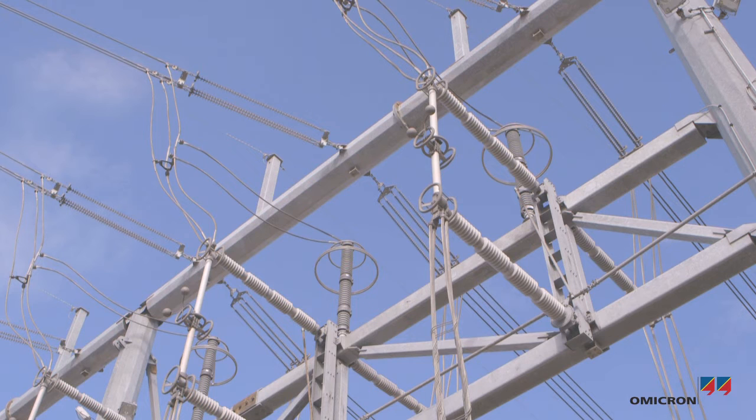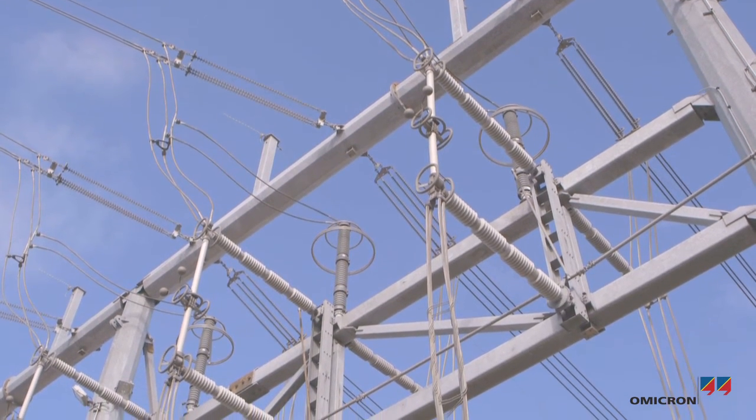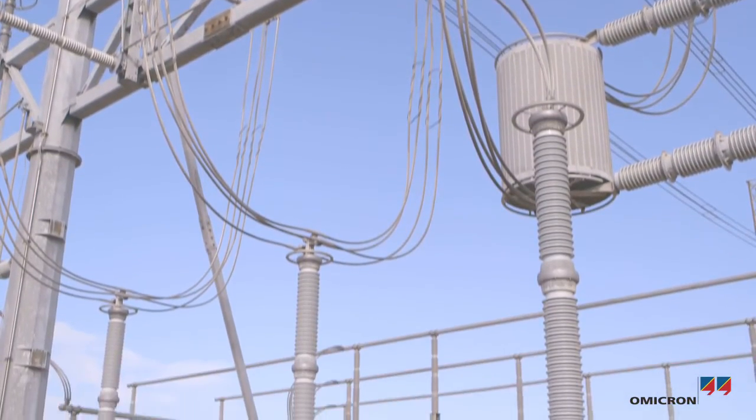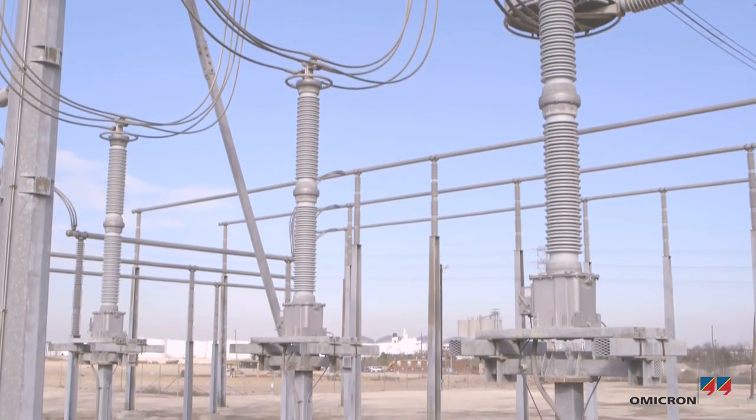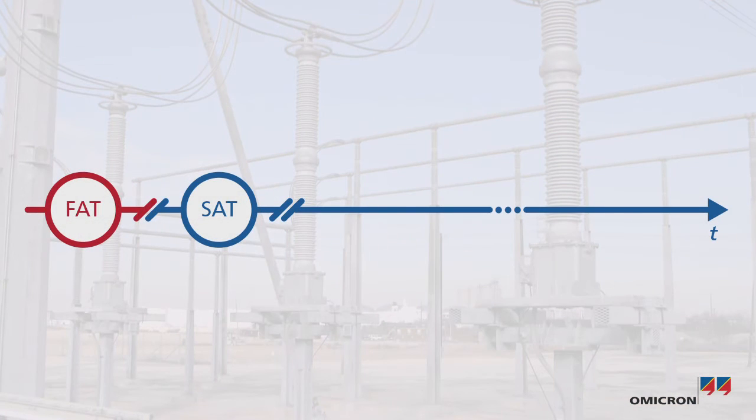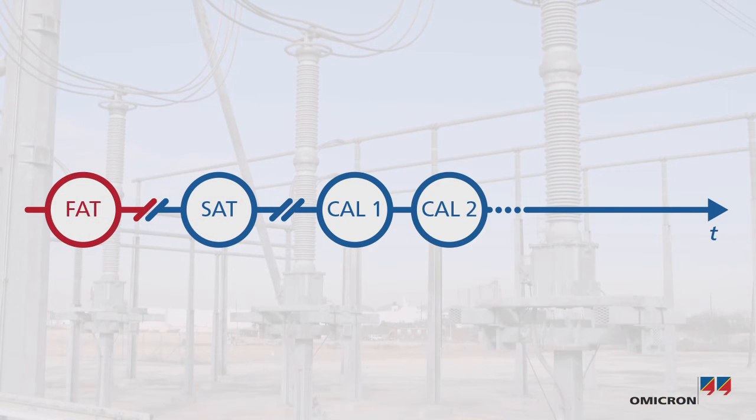In order for a protection system to function reliably and to have correct revenue metering, voltage transformers must operate within their specified accuracy ratings. They should be calibrated on a routine basis in order to ensure their reliability throughout their lifespan.